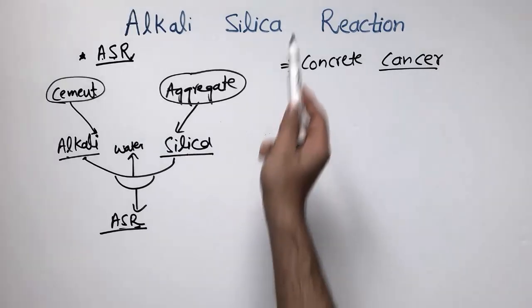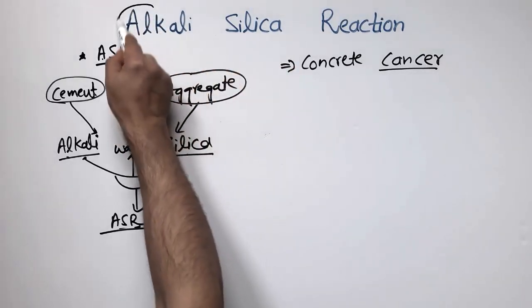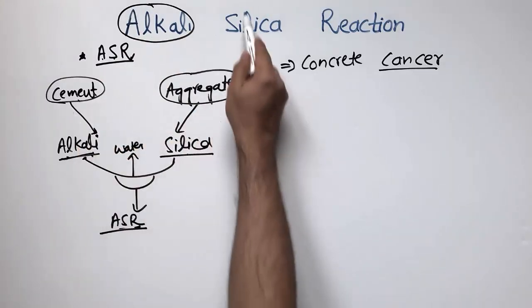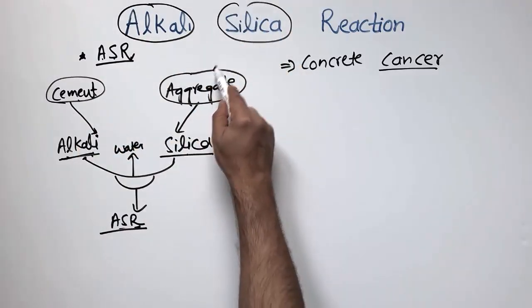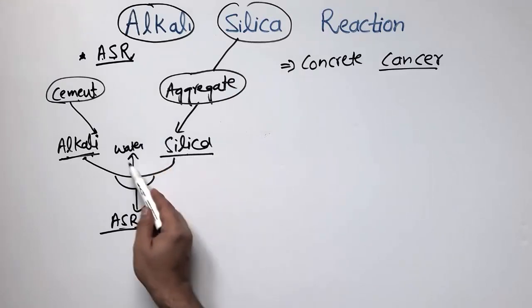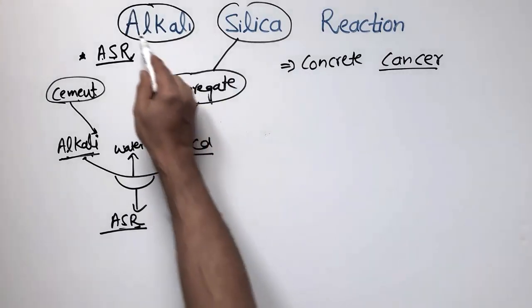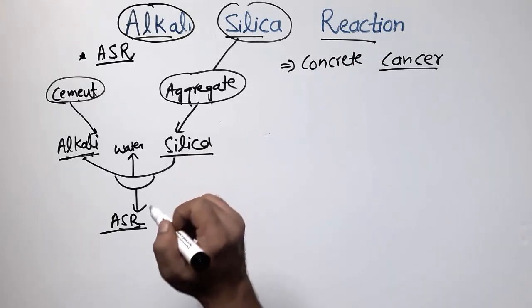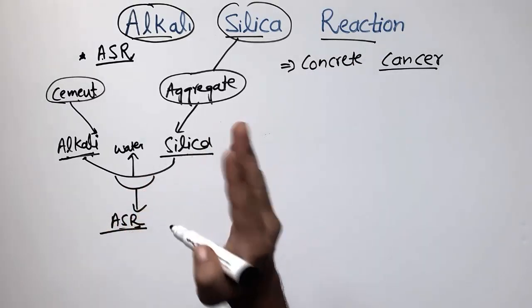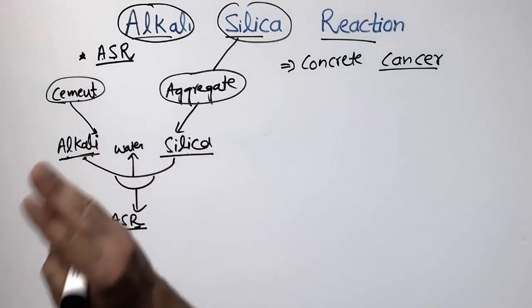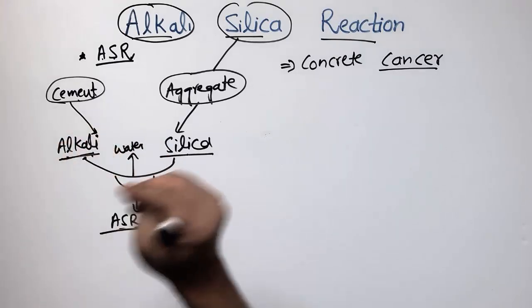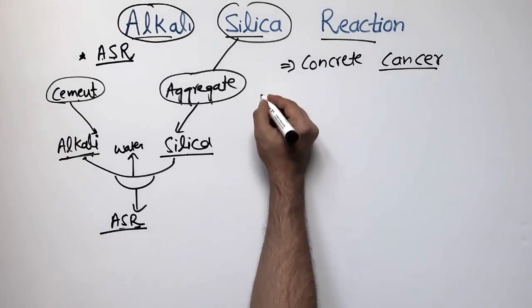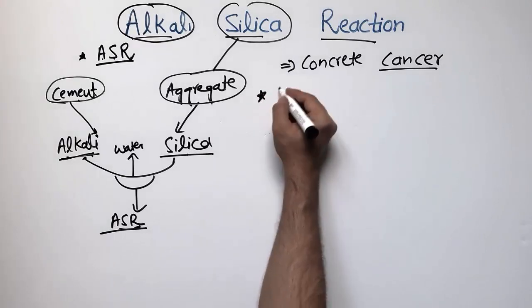That is why it is called the alkali silica reaction — alkali comes from the cement and silica comes from the aggregate. They react in the presence of water to form the alkali silica reaction. Essentially, reactive aggregates combined with higher alkali content in the cement make this reaction possible.